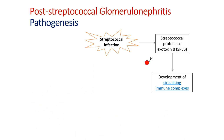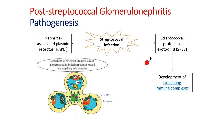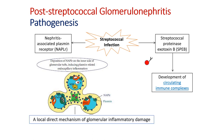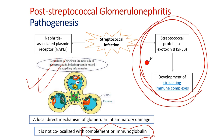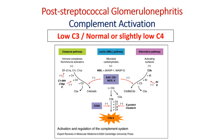There is another mechanism by which streptococcal infection may harm the glomerulus. Secondary to the infection, a nephritis-associated plasmin receptor is deposited on the inner side of the glomerular duct, initiating endocapillary proliferation. This is a more direct mechanism than the antigen-antibody mechanism precipitated by streptococcal proteinase B, and it is not co-localized with immunoglobulin or complement — you will not find immunoglobulin or complement deposition in these cases.